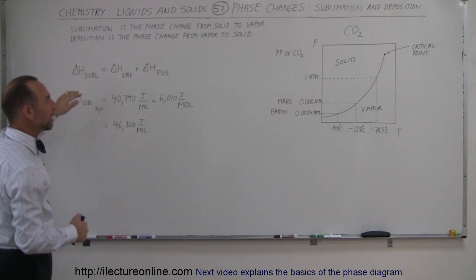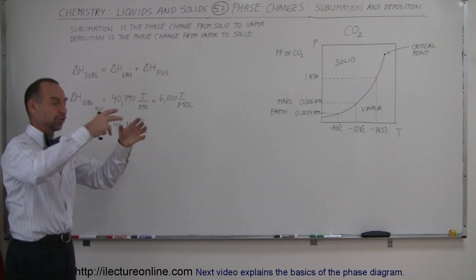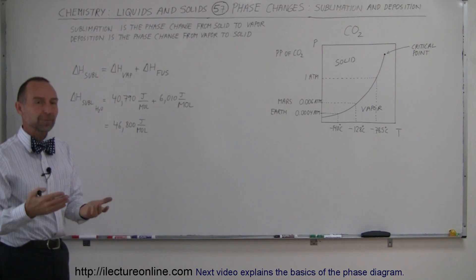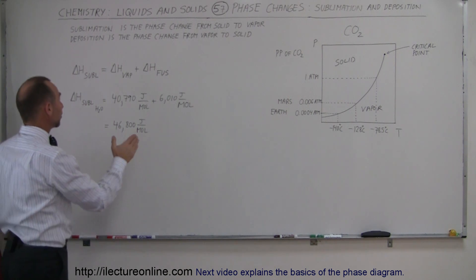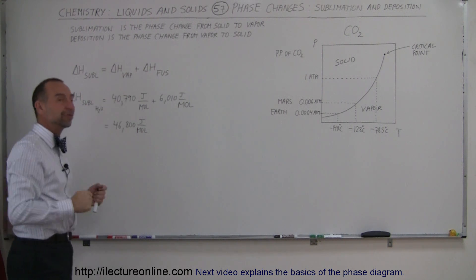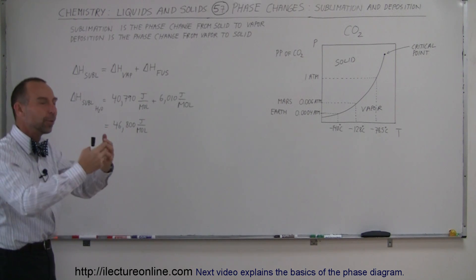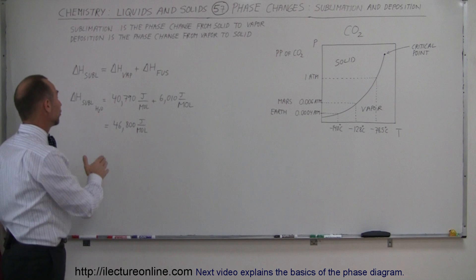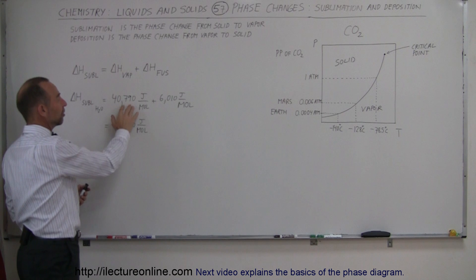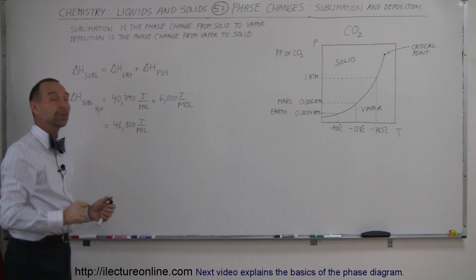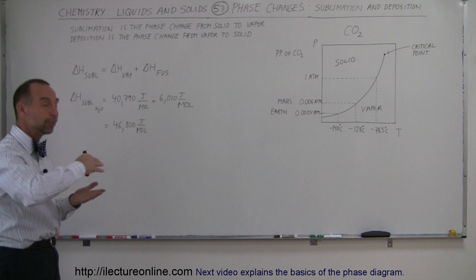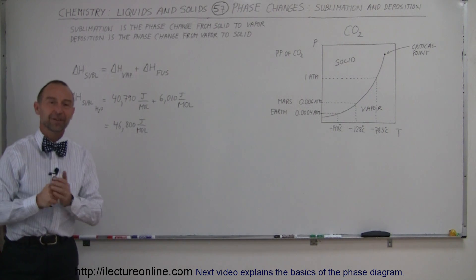Here we have the enthalpy of sublimation, which is the amount of energy required to turn solid carbon dioxide into vapor — or any substance for that matter. Sublimation does require energy, and the enthalpy of sublimation equals the enthalpy of vaporization plus the enthalpy of fusion. It combines the two energies and does it all at once. In the case of water, sublimating ice directly to vapor requires the sum of both values — that total is the enthalpy of sublimation for water.